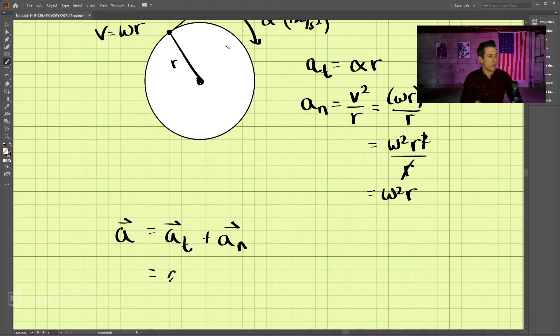This equals alpha cross r. So if we have alpha, which is written as radians per second squared as a vector around some axis, maybe the k direction or the j direction, and r being a vector from the rotating axis to the point of interest where you want to find the acceleration, minus omega squared times r.